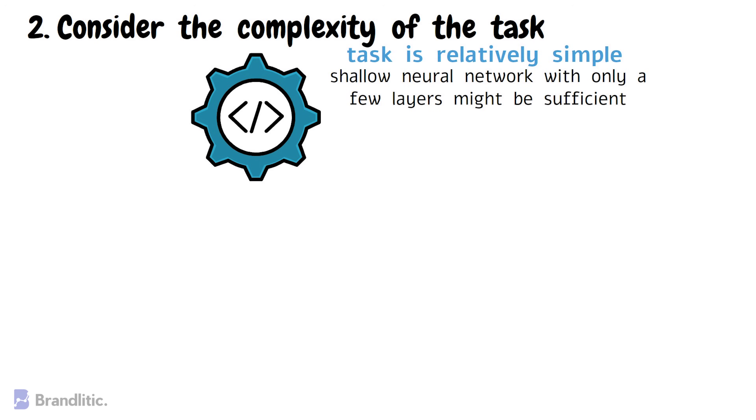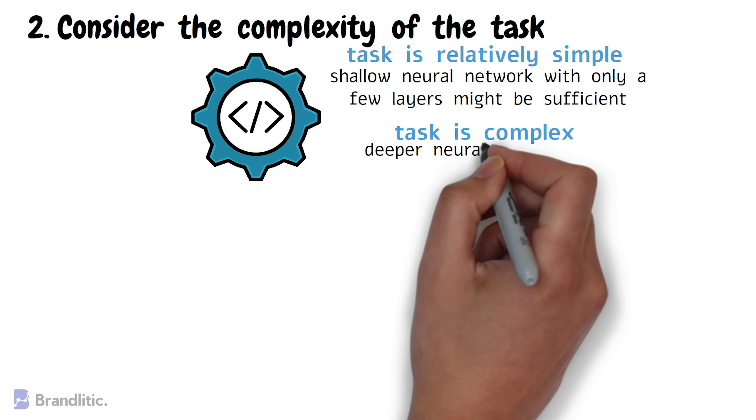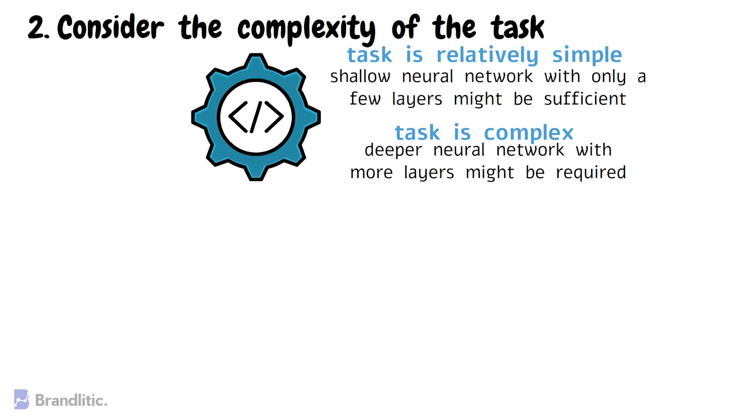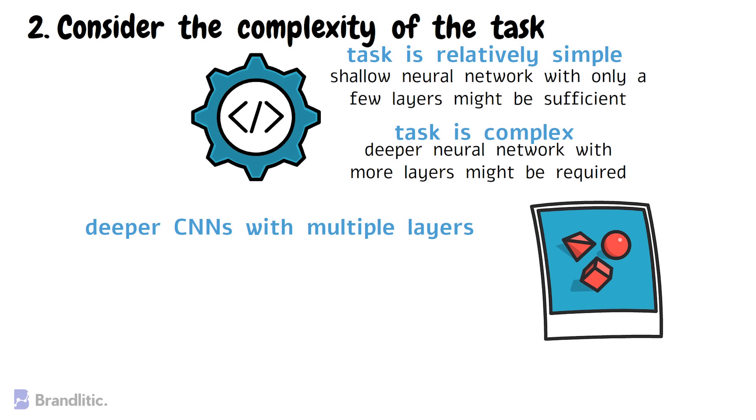However, for a complex task, deeper neural networks with more layers might be required. For example, in image recognition tasks, deeper CNNs with multiple layers are often used. These networks can identify increasingly complex features in an image as they move through layers, ultimately leading to more accurate predictions.